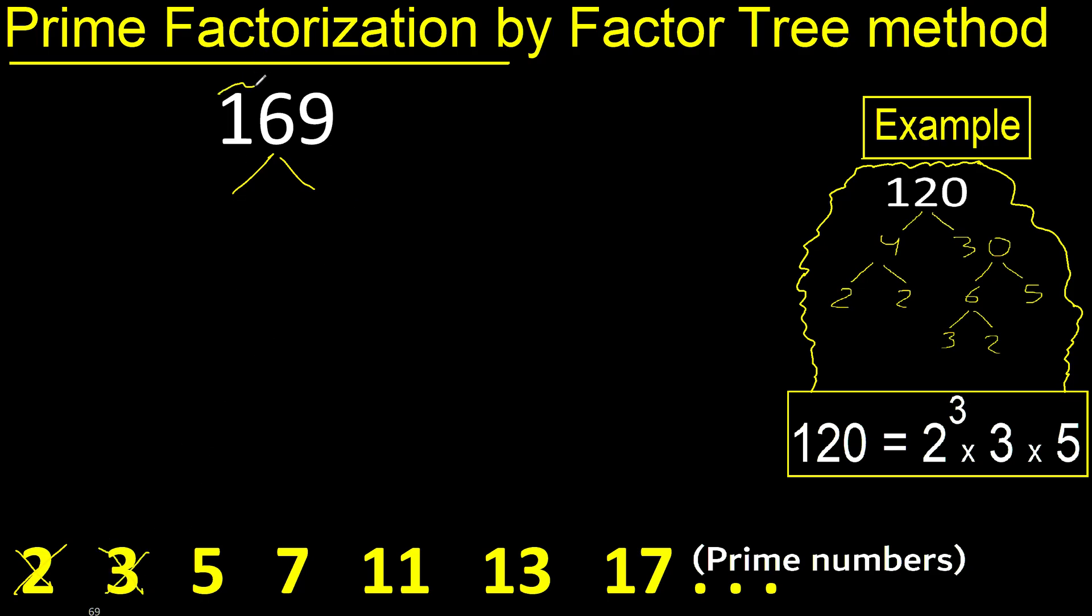3 because 1 plus 6 plus 9 is 16, and 16 cannot be divided by 3. Cannot be divided by 5 because the last digit is not 5 or 0.